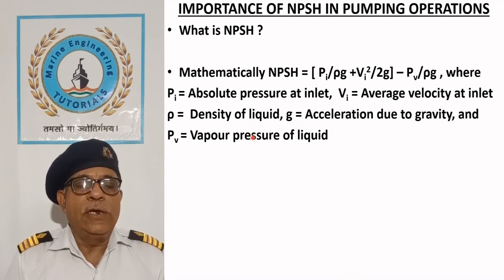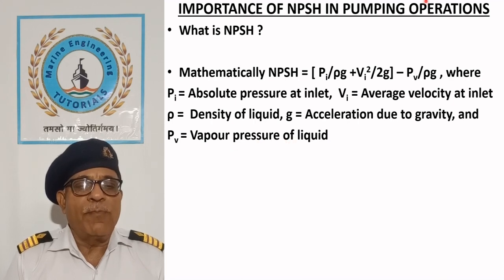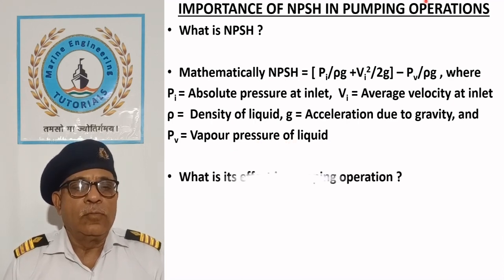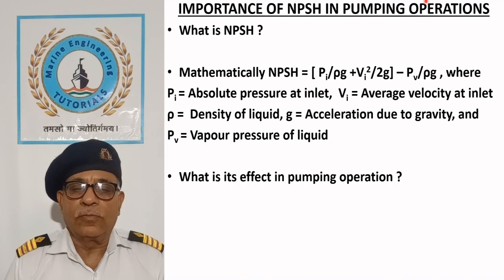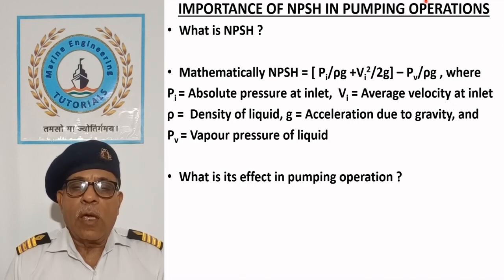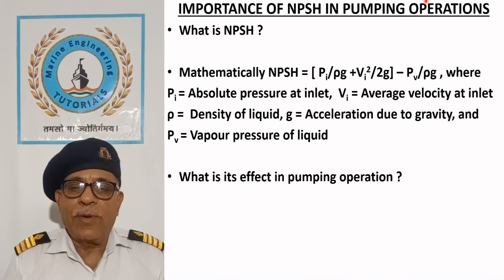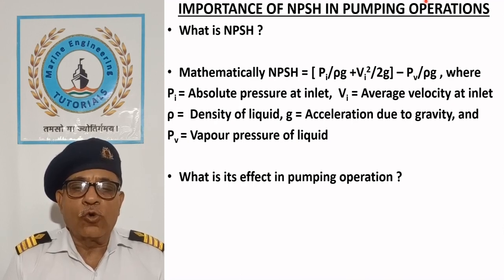Here, g is the acceleration due to gravity and PV is the vapor pressure of the liquid. NPSH is an important parameter for proper functioning of the pump, as the liquid flows into the pump due to this head.